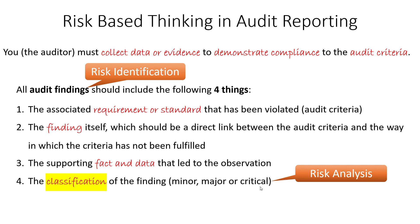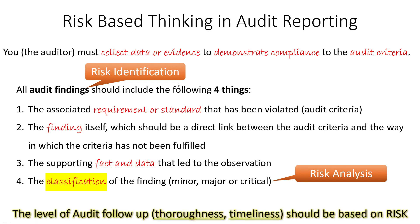By classifying that audit finding, you're doing risk analysis — you are fundamentally quantifying the risk level associated with the risk you've identified. The level of audit follow-up, everything you do in terms of writing the report and verifying corrective actions, should all be based on risk. The thoroughness of the corrective action the auditee puts forward should be based on risk. The timeliness of corrective actions and your follow-up should also be based on risk. If you hand out an audit report with multiple critical findings, you might want to come back in four, six, or eight weeks, and you should change expectations for thoroughness — the depth of that corrective action should be commensurate with the level of risk.